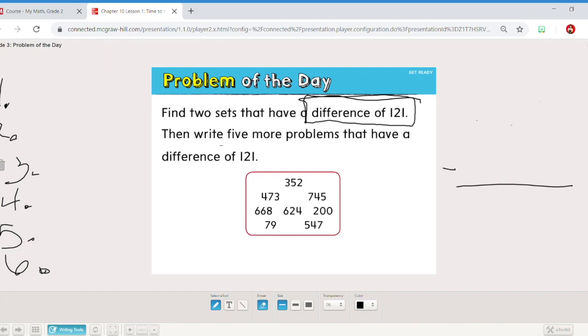I'm going to go ahead and do 668 minus 547. I picked those numbers because I knew that if I looked at the ones place and subtracted I would have one, and I thought that would be a logical place to start. 8 minus 7 is 1, 6 minus 4 is 2, 6 minus 5 is 1. It indeed equals 121. So my first number sentence is 668 minus 547.